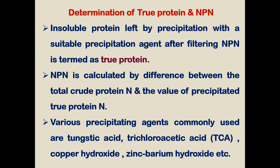Various precipitating agents commonly used include tungstic acid and trichloroacetic acid (TCA), which is a well-known precipitating agent for true protein estimation. We currently use TCA in the laboratory for precipitation and estimation of true protein. Copper hydroxide and barium hydroxide are also used, along with other different chemicals as precipitating agents.